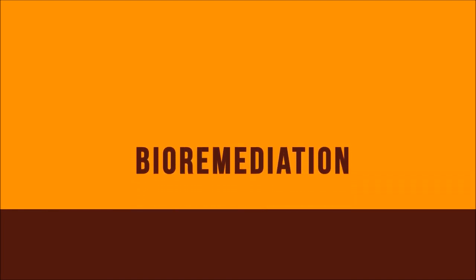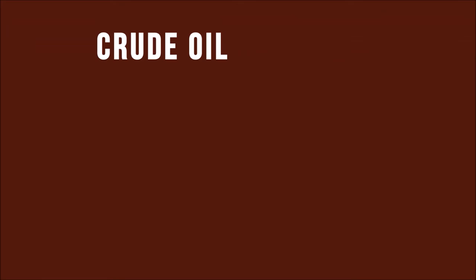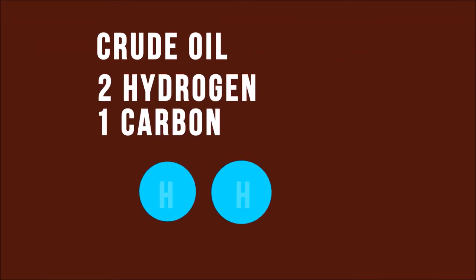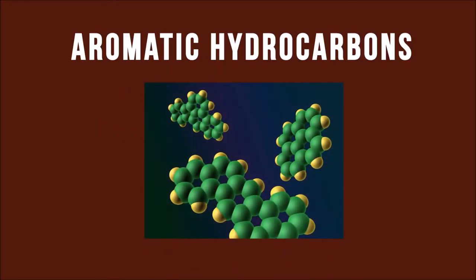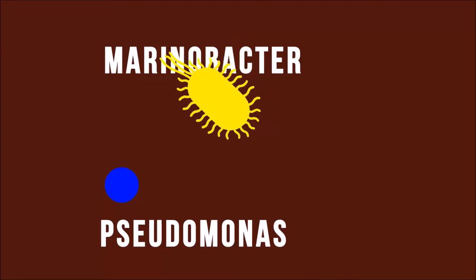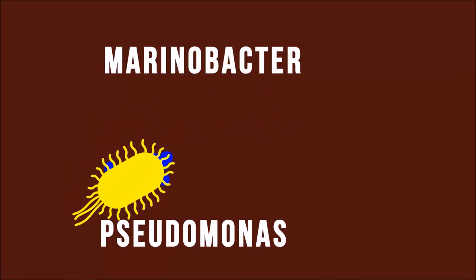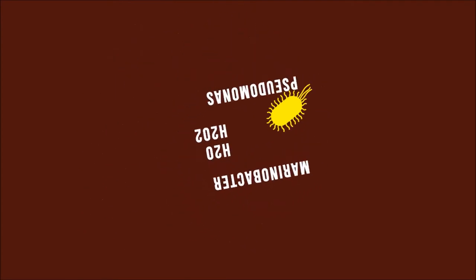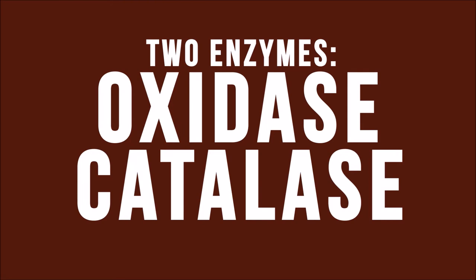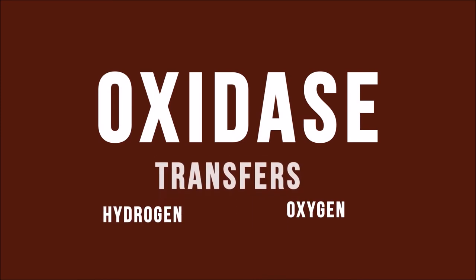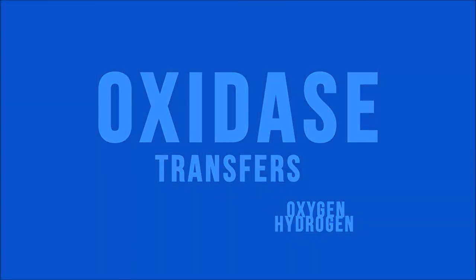This is where bioremediation comes in. The composition of crude oil consists of a ratio of two hydrogen atoms to one carbon atom. These are called hydrocarbons, and the most toxic among these are aromatic hydrocarbons. Microorganisms in the environment, such as marinobacter and pseudomonas, are responsible for breaking hydrocarbon molecules down. They ingest the particles and metabolize them into compounds that are much simpler, such as water or hydrogen peroxide. The bacteria responsible for this process contain two different enzymes: oxidase and catalase. Catalase is responsible for the decomposition of the hydrocarbon molecules, and oxidase transfers the hydrogen molecules to oxygen molecules to make common water-soluble particles.